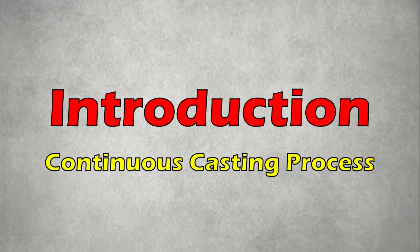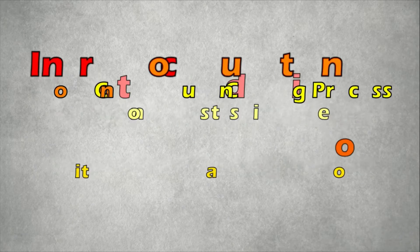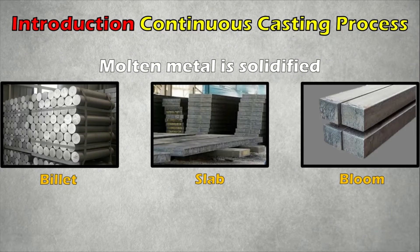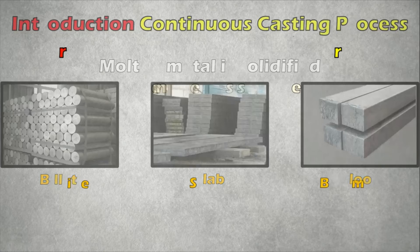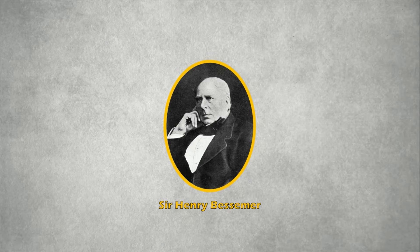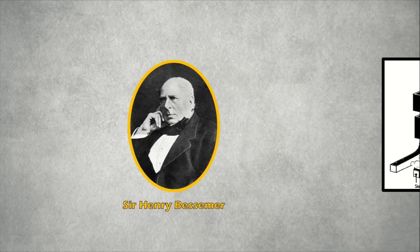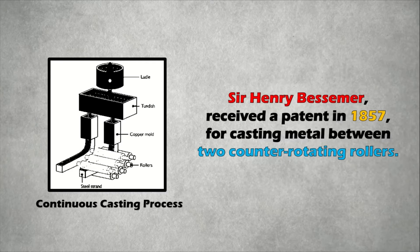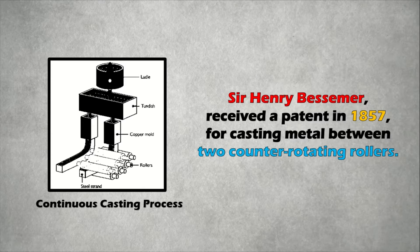What is a continuous casting process? Continuous casting, also known as strand casting, is the process where molten metal is solidified into billets, slabs, and blooms. Sir Henry Bessemer received a patent in 1857 for casting metal between two counter-rotating rollers. But this method wasn't introduced until the 1950s in industries because of many technical problems.